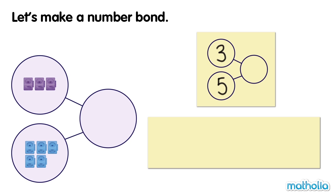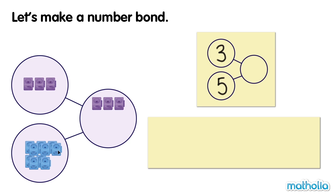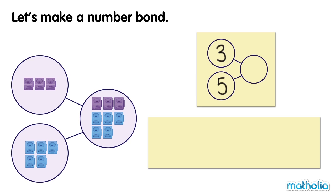Let's find the whole. Three and five make eight. Eight. There are eight cubes all together.